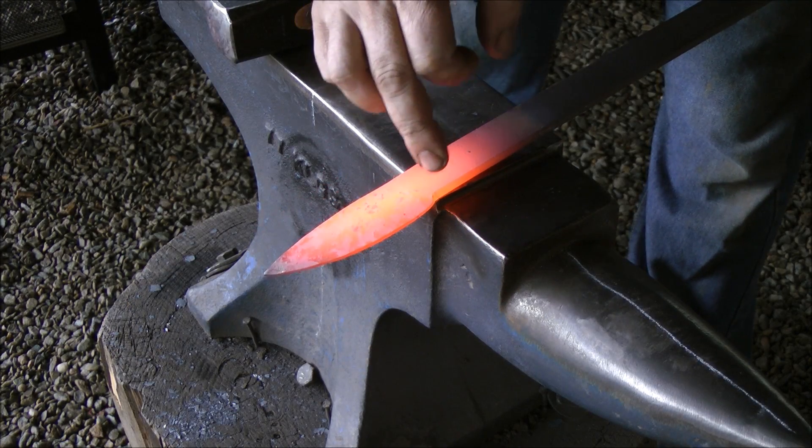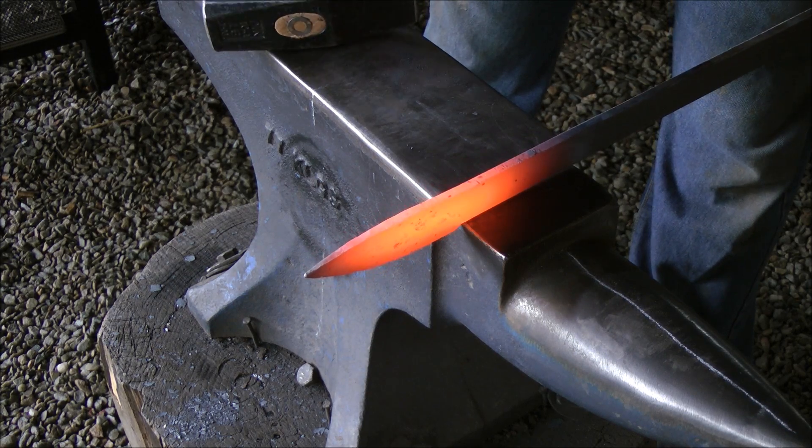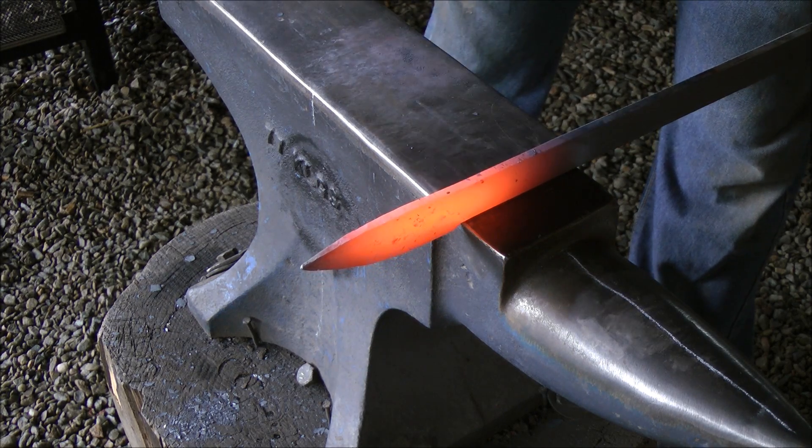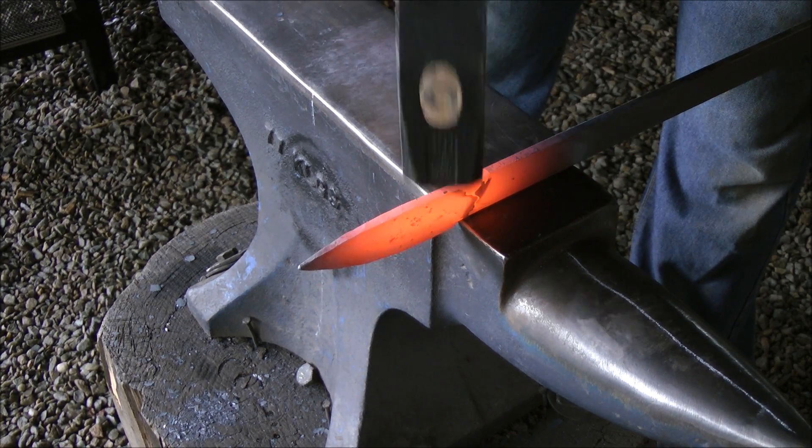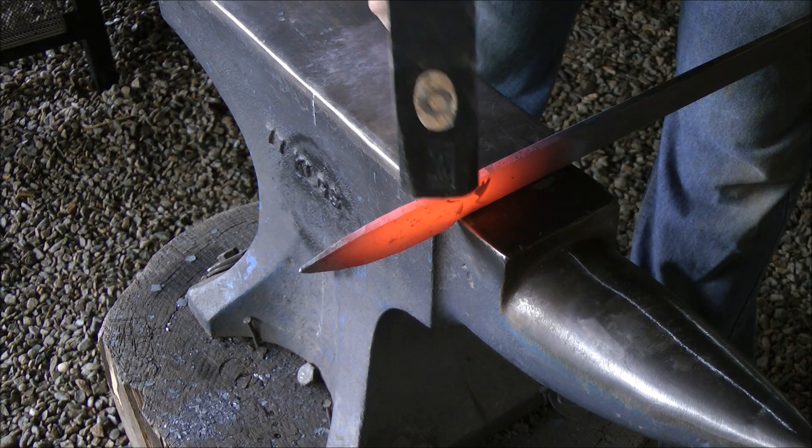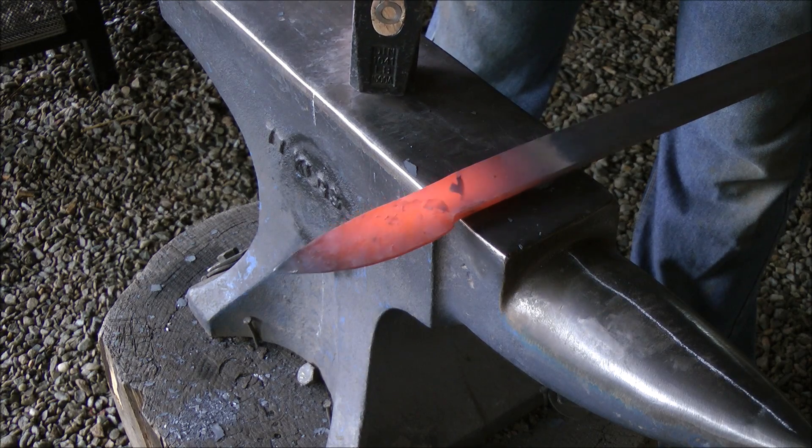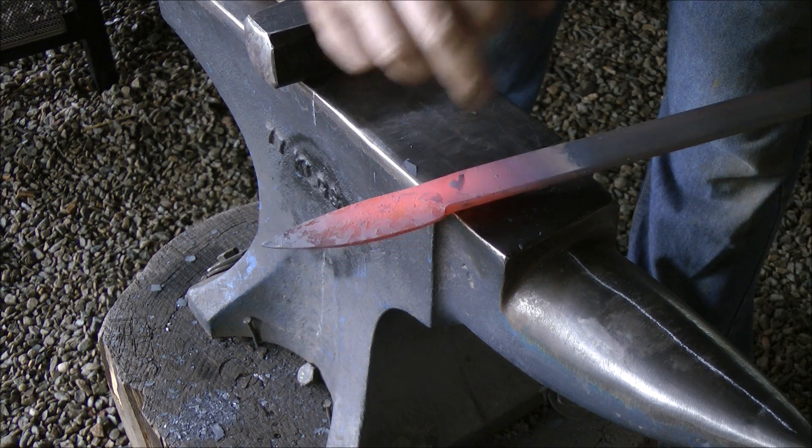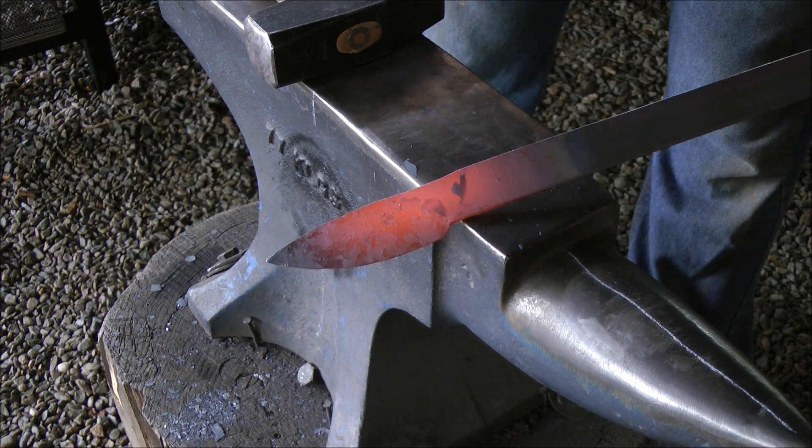Now I want to add a bit more definition in there, find a sharp corner on the anvil, and then hammer 90 degrees above that, right across from it, hammer down on that little mark there, creating a bit more definition in the choil area.